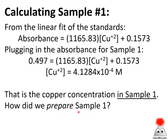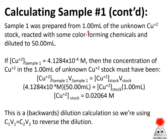Well, let's think about how we prepared that sample. We prepared sample one by taking one milliliter of our stock and reacting it with some things, and then diluting it to 50 milliliters. So the concentration in this one milliliter was, relatively speaking, very high compared to this 50 milliliter. Or another way of thinking about that is all of the copper in this 50 milliliter sample one that we prepared came from one milliliter of the stock. So we can do that calculation and we can get that our copper stock was 0.02064 molar.